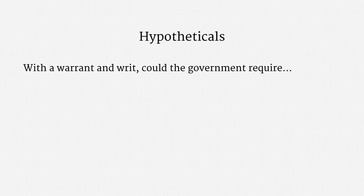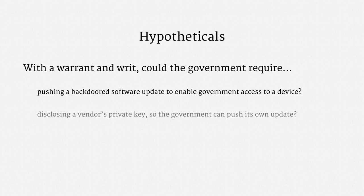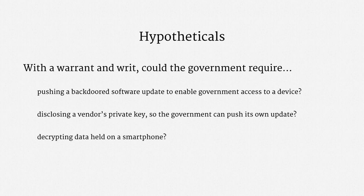Let me offer a few hypotheticals to get you thinking about how the All Writs Act applies to modern electronic surveillance. Suppose the government wants help hacking a device. With a warrant and a writ, could it require pushing a backdoored software update that enables access? Or could the government require disclosing a vendor's private key so the government can push its own backdoored update? What about compelling a device manufacturer to decrypt data held on a smartphone? The answer to all of these questions, once again, is maybe.